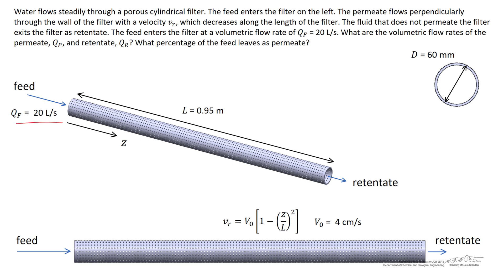We know the volumetric flow rate of the feed is 20 liters per second, and we know the length and the diameter of the filter: 0.95 meters and 60 millimeters. We also know the radial speed of the fluid leaving the filter, and this speed is a function of z. At the entrance of the filter z is equal to zero, and in that region vr is equal to v naught, which is equal to 4 centimeters per second. At the exit of the filter z is equal to L, and we find that at that region vr is equal to zero.